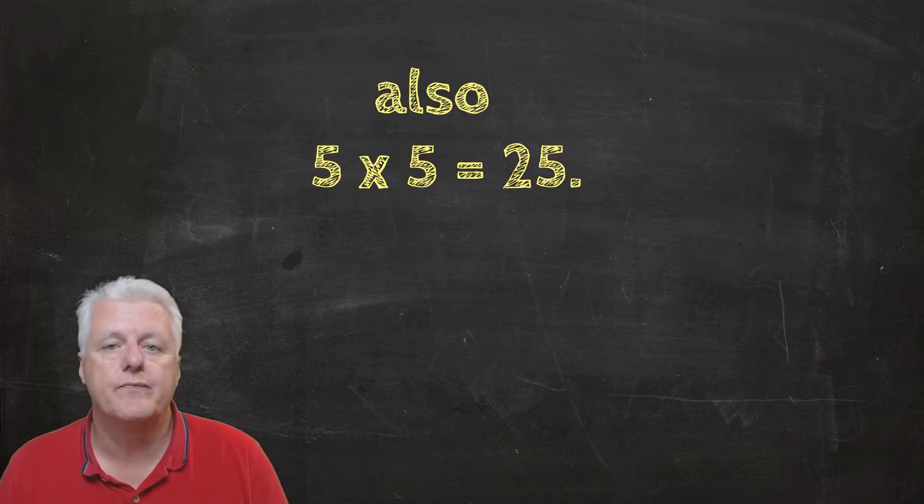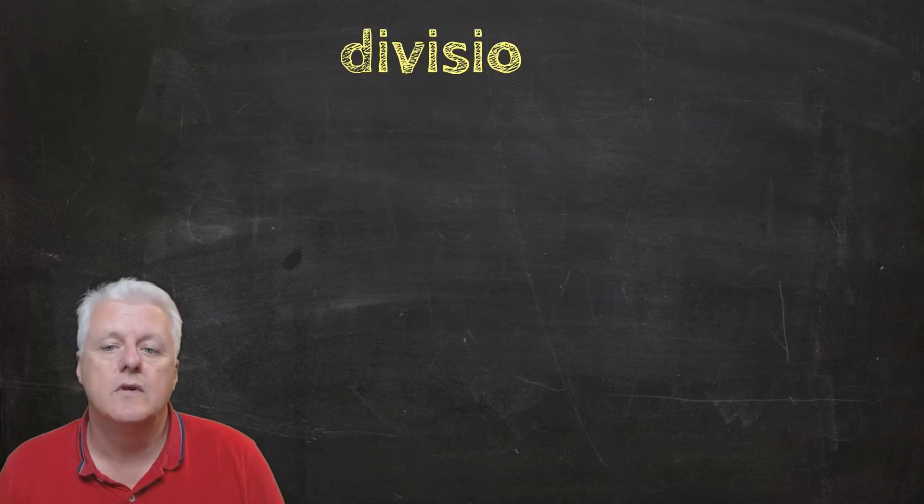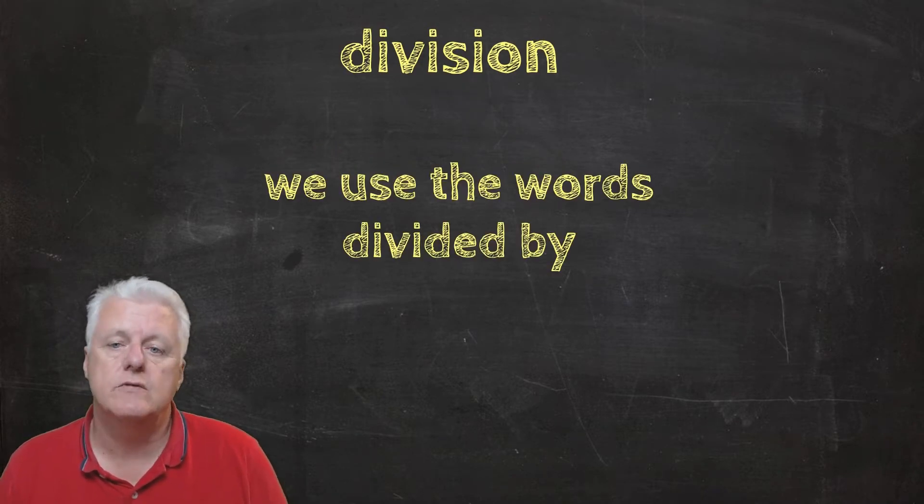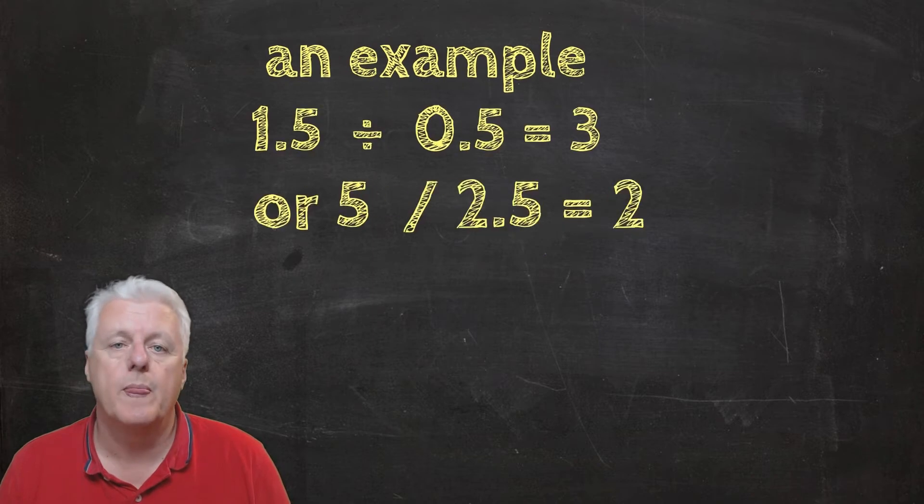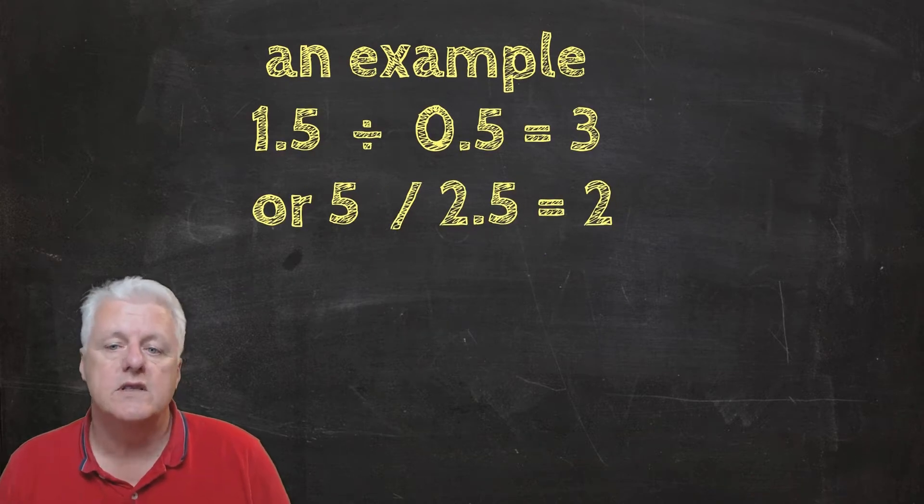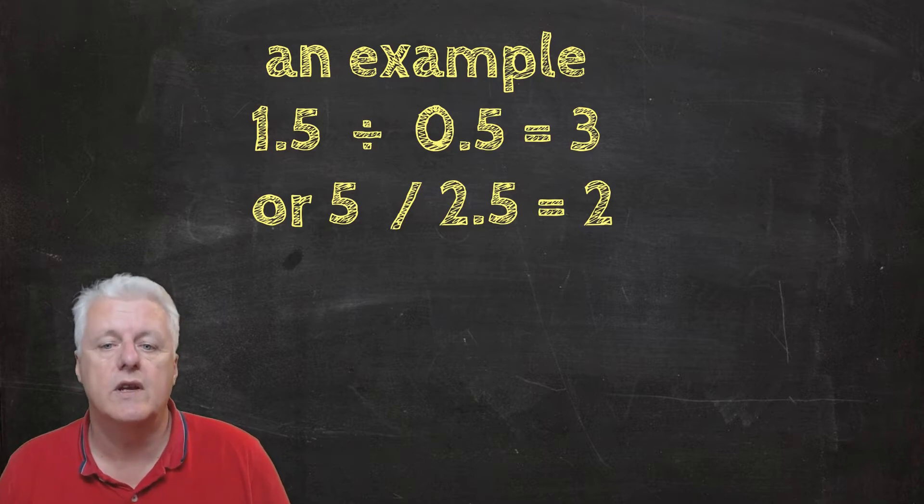In division we use the words divided by. An example: 1.5 divided by 0.5 equals 3, or 5 divided by 2.5 equals 2.